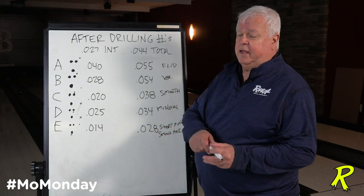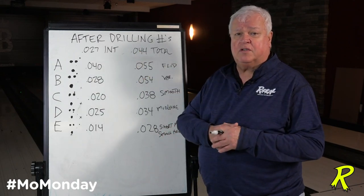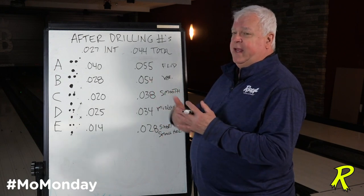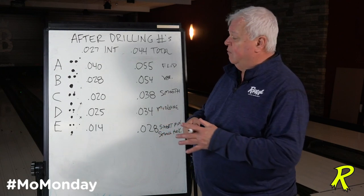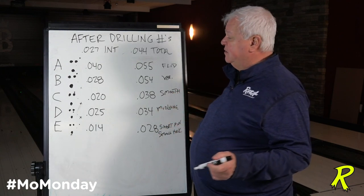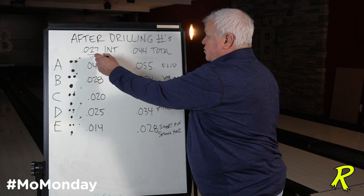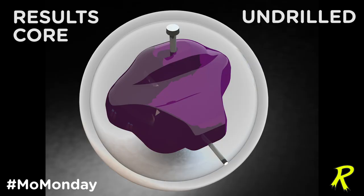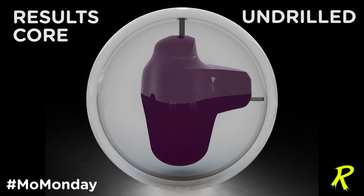Today we're going to talk about after-drilling numbers. People have asked what creates the drilling numbers and the motion. A ball that starts out with a 027 and 044 without holes in it, sitting on your desk or table, doesn't really tell you anything except where the starting point is.